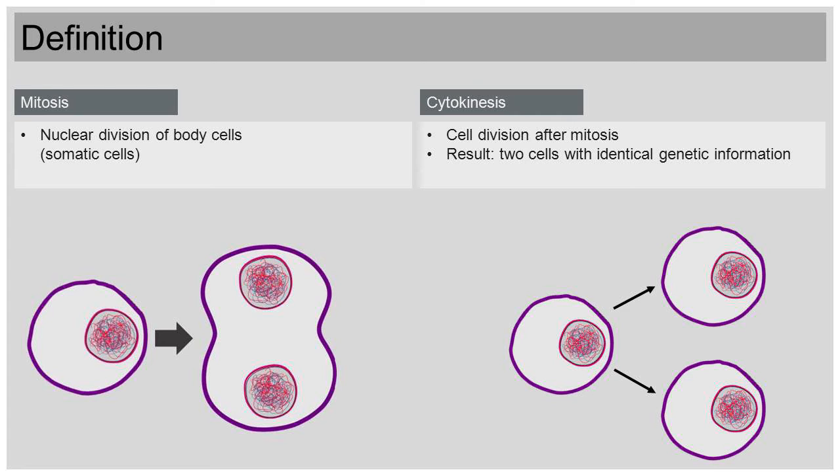After the division of the nucleus, mitosis, and after the division of the cell, cytokinesis, one finds two cells with identical genetic information. The two final cells are basically clones of the original mother cell. Let's talk about the cell cycle, the life cycle of the cell.